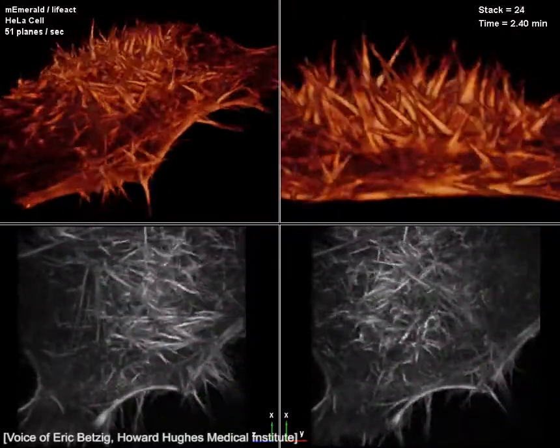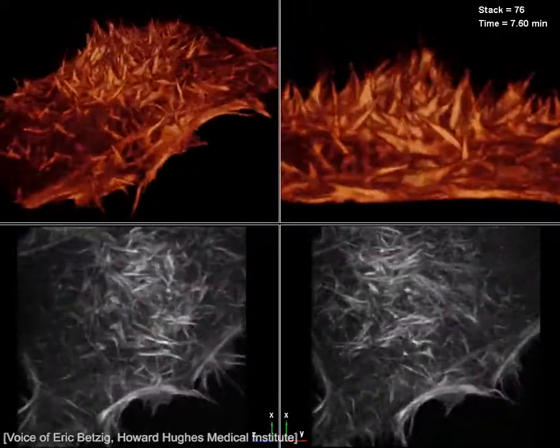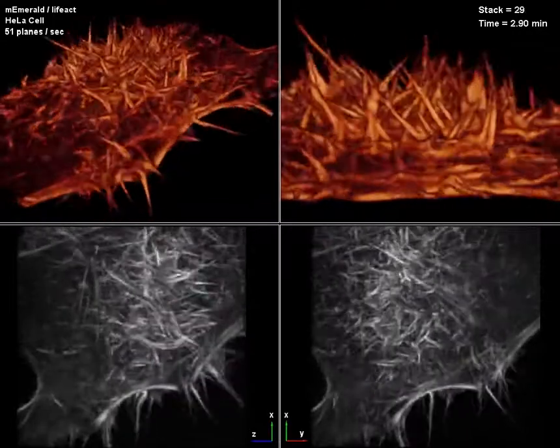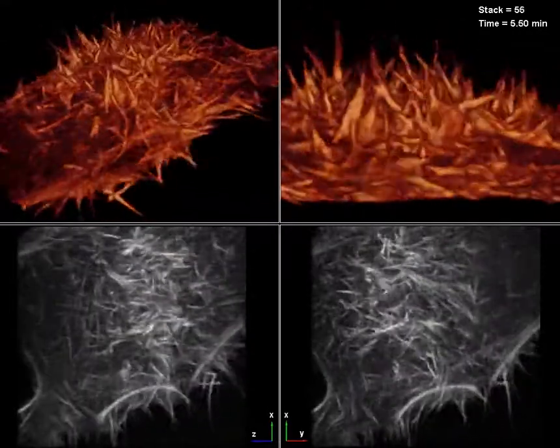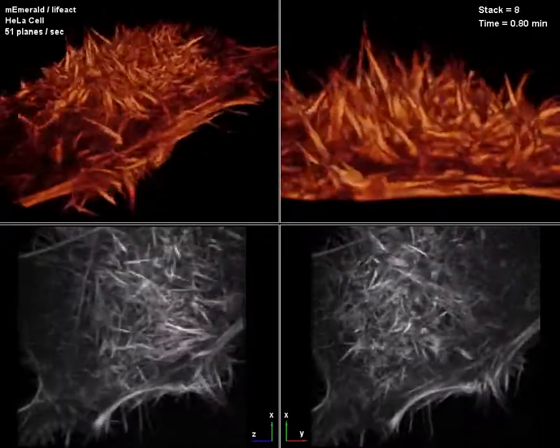This cell is a human cervical cancer cell, a HeLa cell from Henrietta Lacks, if you've read that book. It's showing the cell on a cover slip, but particularly on this dorsal surface, you see all these waving philipodia.